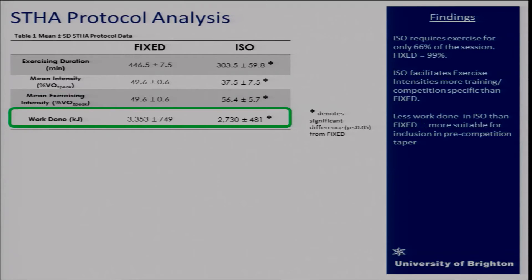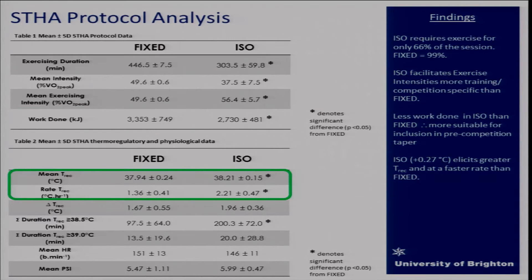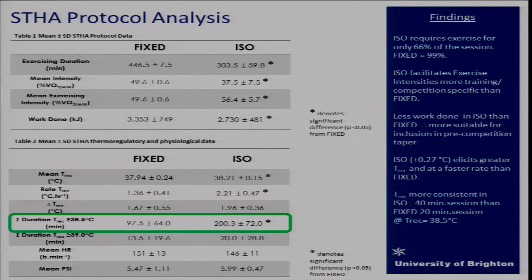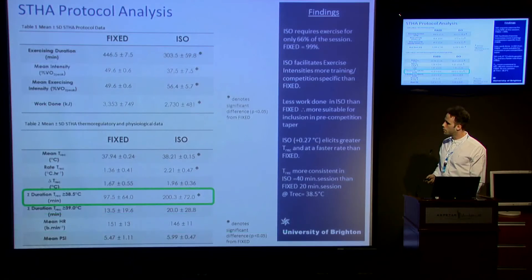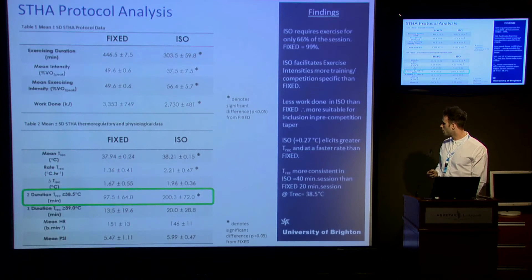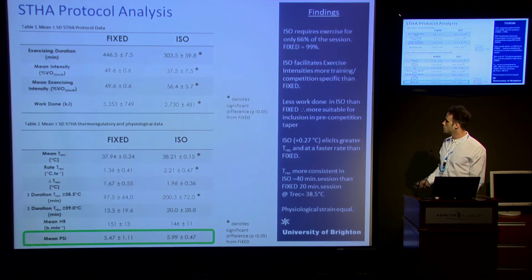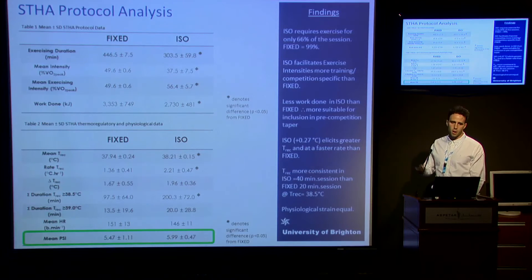Notably, implementing heat acclimation prior to competition as part of an athletic taper involves less work in an ISO model. Mechanistically, we see roughly a quarter of a degree greater rectal temperature in ISO and a greater rate of increase in ISO compared with fixed. We are also more consistent with temperature targeting in the isothermic model — approximately 40 minutes per session at the 38.5°C target in ISO versus only 20 minutes in the fixed model. This difference is not a consequence of any increased physiological strain, which when expressed as a mean shows a balance between the methods.